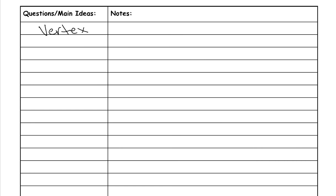Let's go back to the vertex. In these two examples, the vertex is I for both — it's just the pointy end of your angle. So for both of these, the vertex is I.